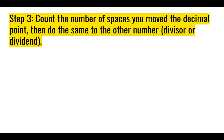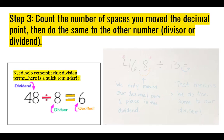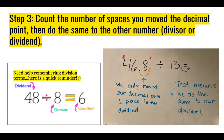Step three: count the number of spaces you moved the decimal point — how many numbers it had to pass to become a whole number — then do the same thing to the other number. In 46 and 8 tenths, I moved the decimal point one whole space, passing one number. So when looking at my number 13, I also have to move that decimal point one whole space. Do this on your problem now and make sure it looks like my problem.